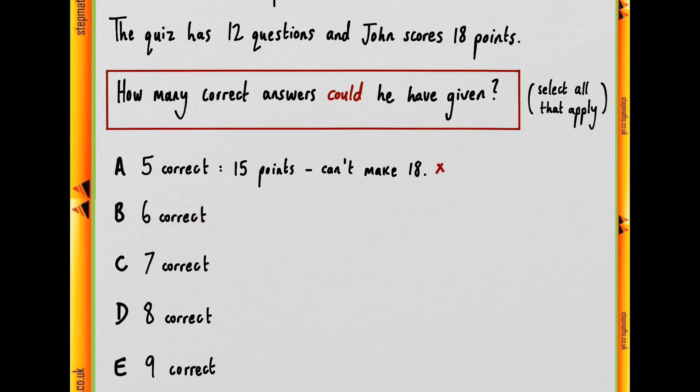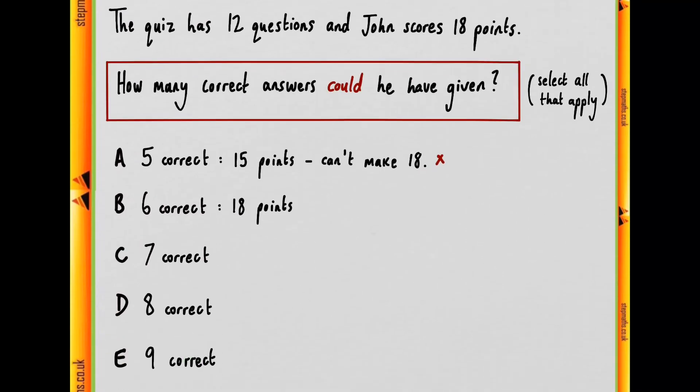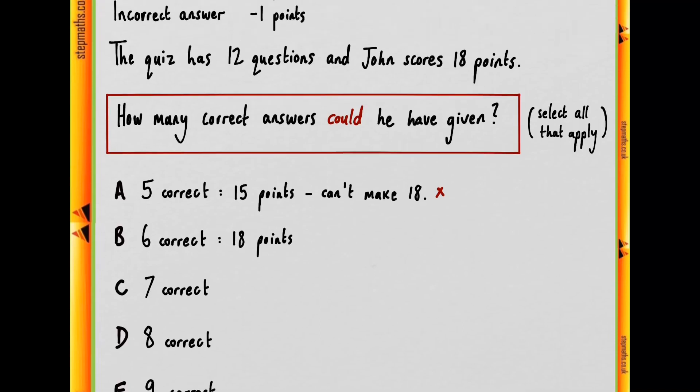So six correct answers, well multiplied by three, that means he's got 18 points. Is that possible after 12 questions? So if he got six correct with his six questions, if he has zero incorrect answers, and the remaining six he gives no answer, then this is a possible permutation.